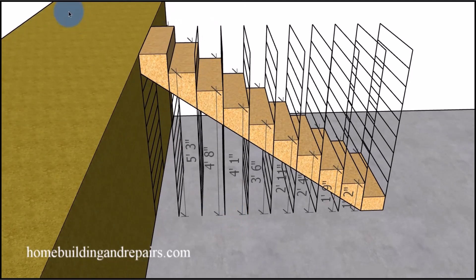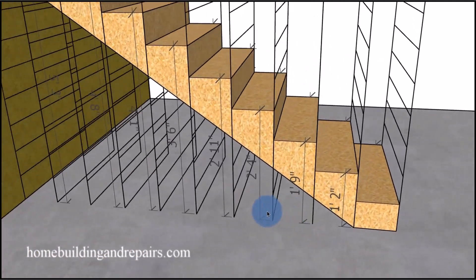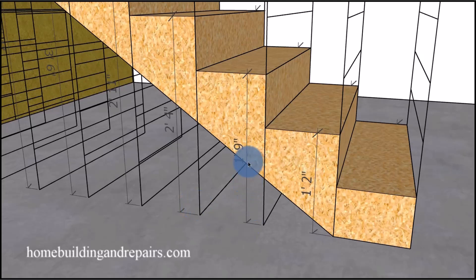And here you can see where one foot nine represents 21 inches or three times seven. So again, is it going to be easier for you to use a calculator or a story pole?